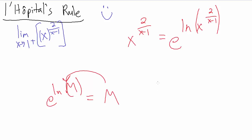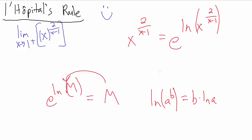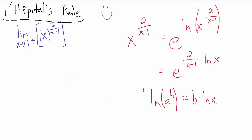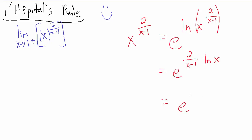Now we can use the log property that says the natural log of A to the B equals B times the natural log of A — we can pull the exponent out as a factor. Using 2 over x minus 1 as our exponent B and x as our base A, this becomes e to the 2 over x minus 1 times the natural log of x. Simplifying slightly, we rewrite this as e to the quantity 2 times the natural log of x, all divided by x minus 1.